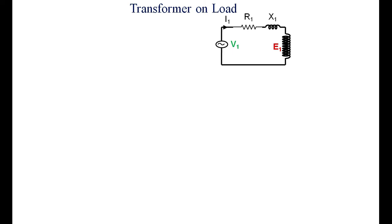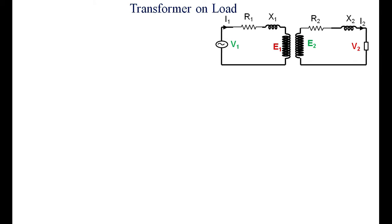Recall: the primary is represented by R1 and X1, and the primary winding. The applied voltage is V1, and the induced voltage is E1. Similarly, we draw the circuit for the secondary winding having resistors R2 and X2. E2 is the induced voltage in the secondary. V2 is the terminal voltage and I2 is the load current. To get V1, you have to add I1R1 and I1X1 to E1, so that you get the applied voltage V1.